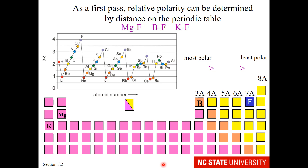So if you were asked to rank magnesium fluoride, boron fluoride, and potassium fluoride from most polar to least polar — potassium and fluorine are furthest apart on the periodic table, and if we calculate their delta chi, they are the most polar combination. Magnesium and fluorine are the next closest and are in the middle. Boron and fluorine would be the least polar, both by estimated distance on the periodic table and by calculating their delta chi.